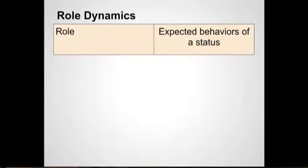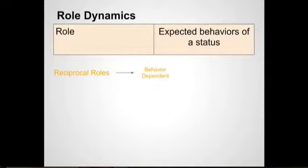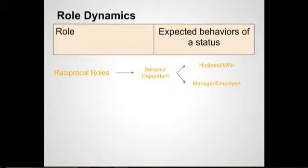Statuses can change and our roles can change. A role is the expected behaviors of a status — something we are expected to do depending on our position. There are different types of roles. We have reciprocal roles, which means behavior is dependent on another status. For example, if I'm a husband, I have to have a wife — I cannot be a husband without a wife. Similarly, a manager cannot be a manager without employees.